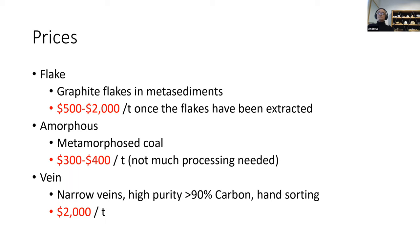As with all industrial minerals, markets are really key and the price varies tremendously according to the specification, the type of graphite, and the application. Flake graphite can vary tremendously between roughly $500 and $2,000 USD per metric ton once you've extracted the flakes. Amorphous graphite is the cheapest variety, often not the purest. Vein graphite — the only producer is Sri Lanka — can reach prices around $2,000 or more, and they can produce material up to 99 percent purity by hand sorting.